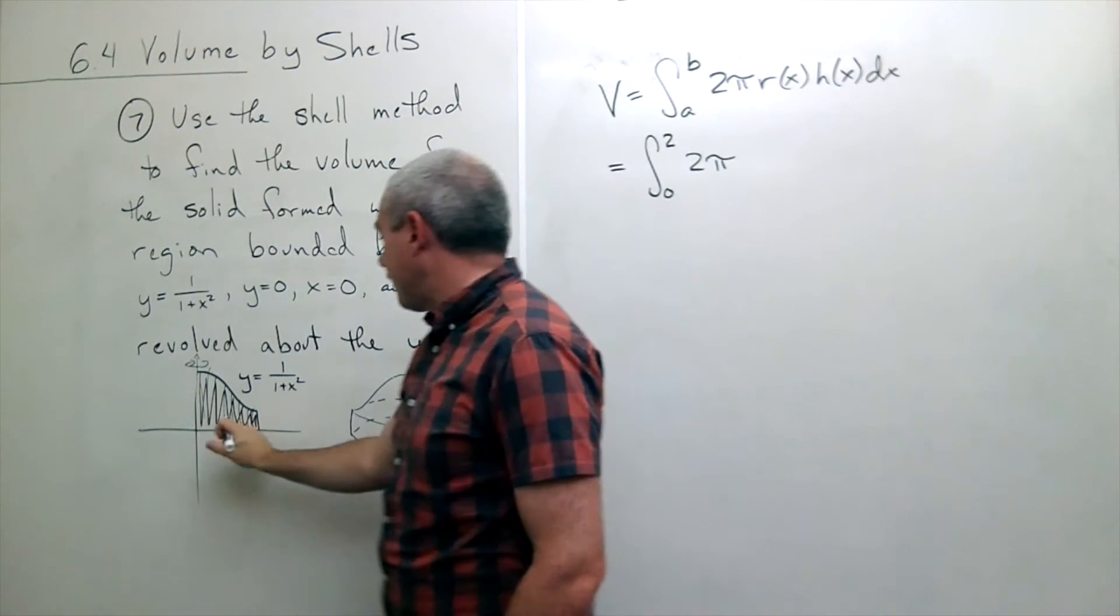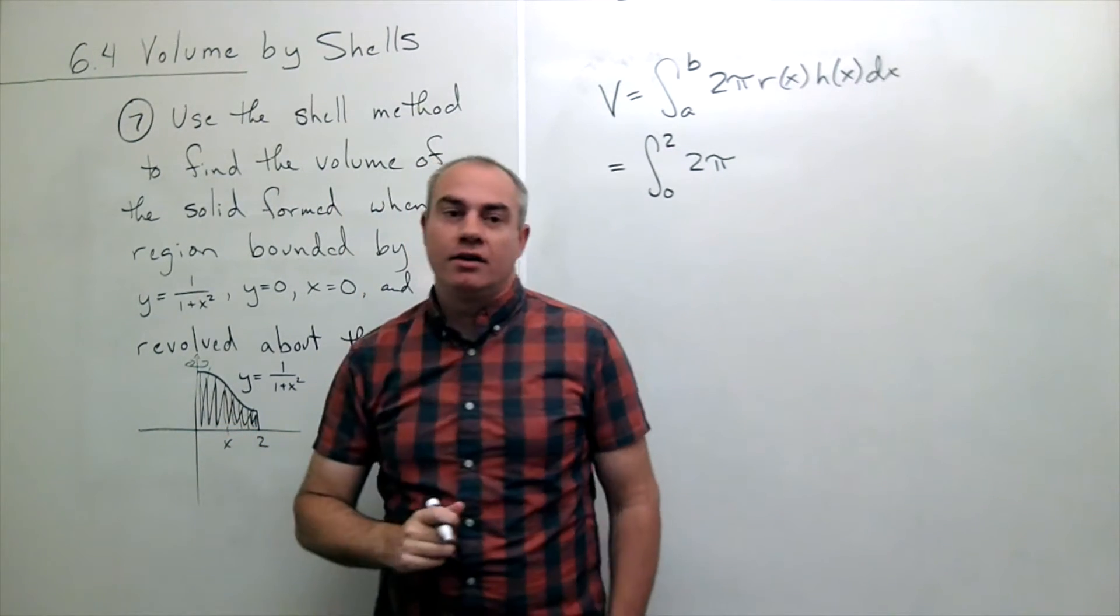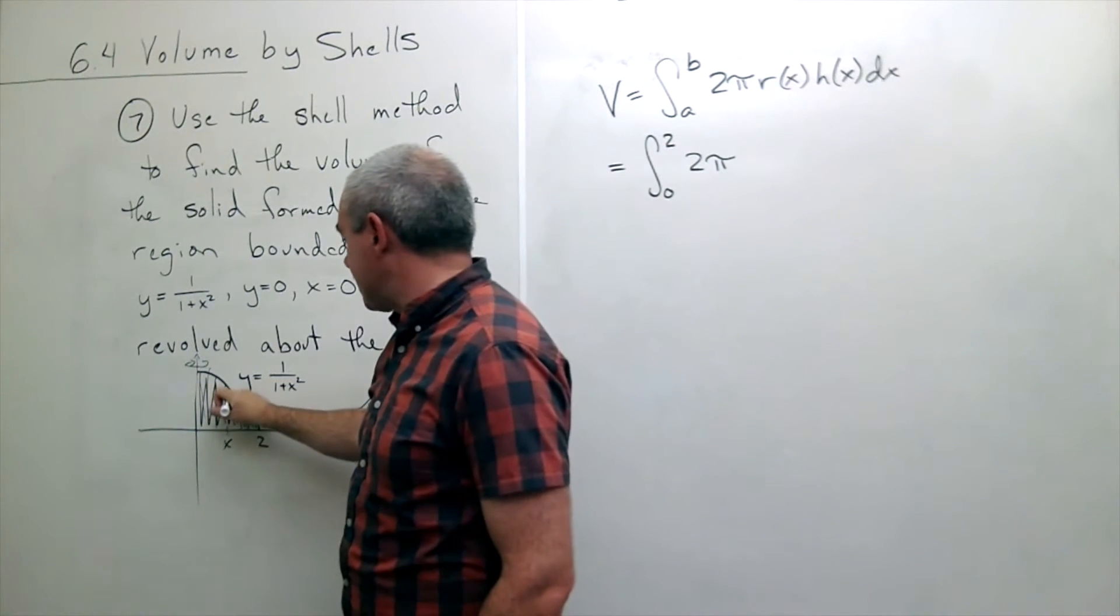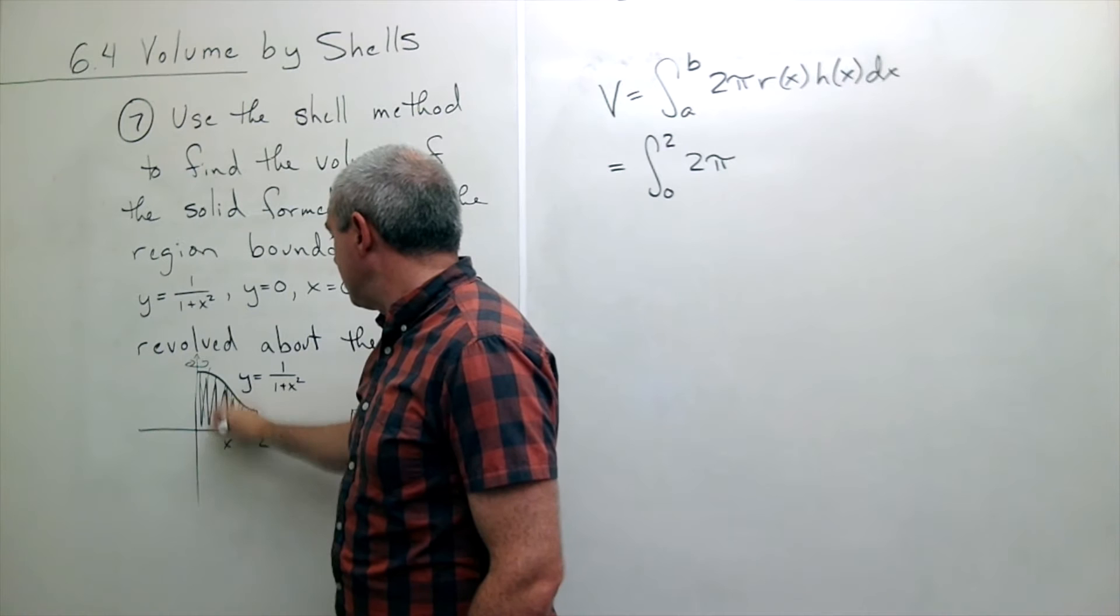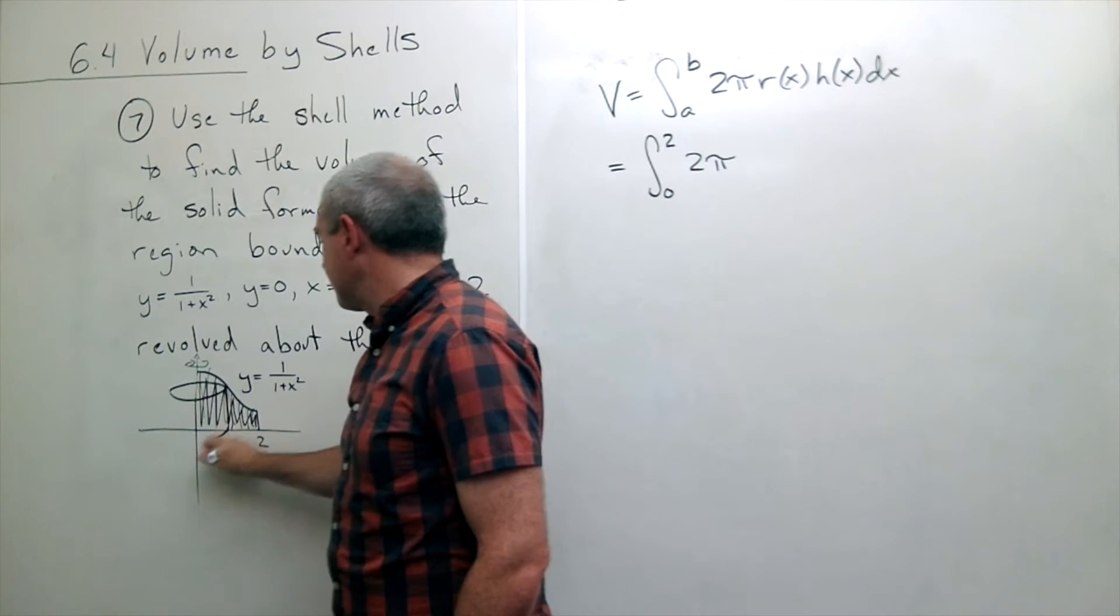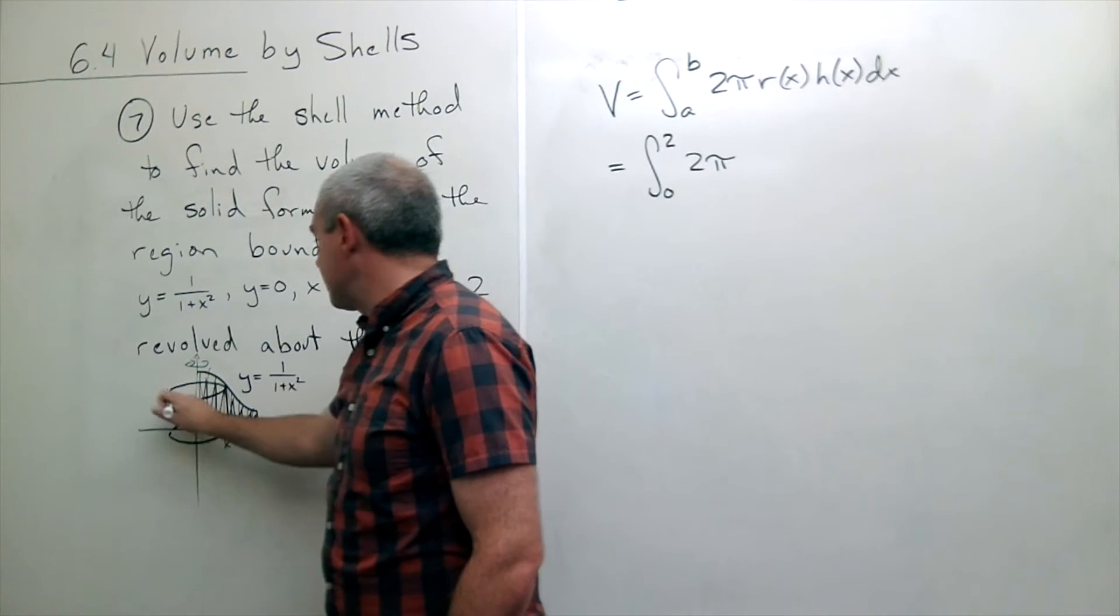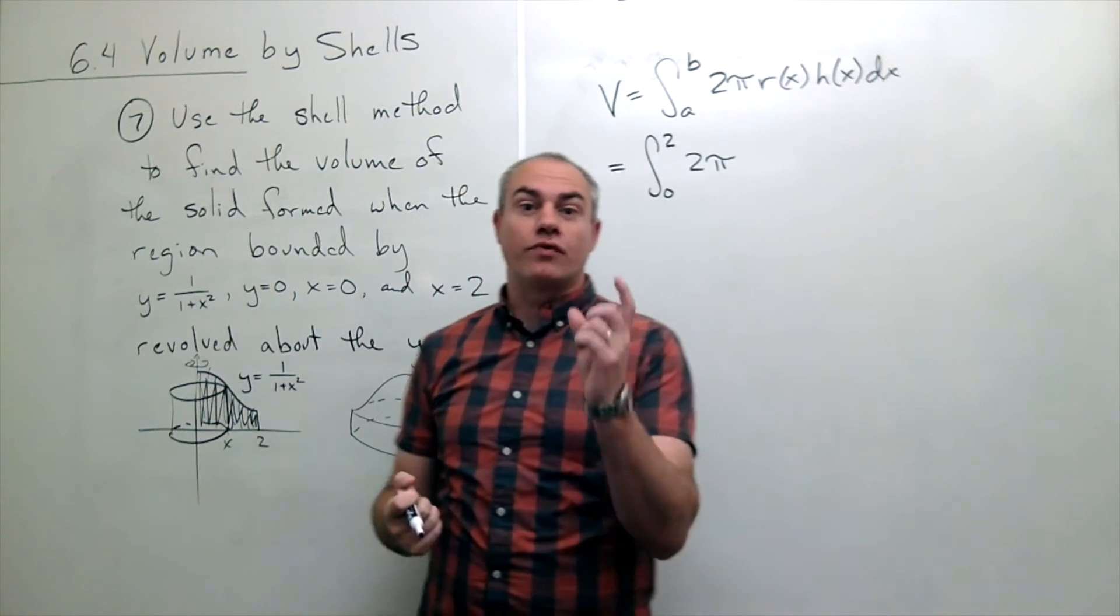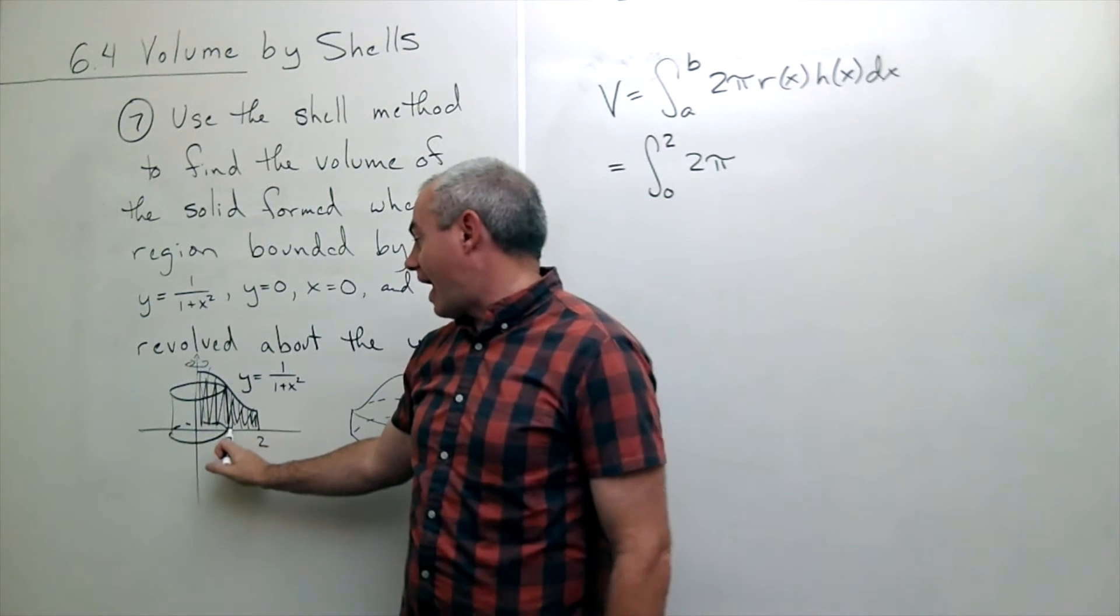Okay if I take a random x over here in between 0 and 2 and I make a slice at x and then I spin that slice, no surprises I get a cylinder. And the question is what's the radius of that cylinder at x?